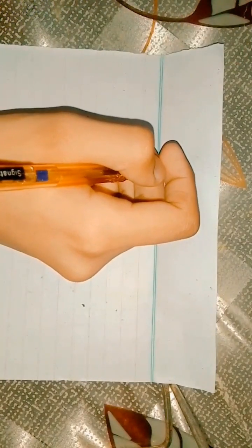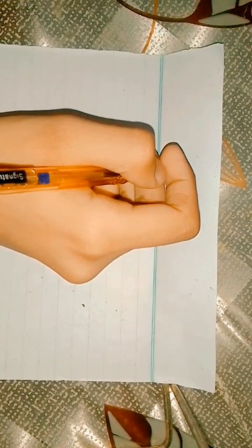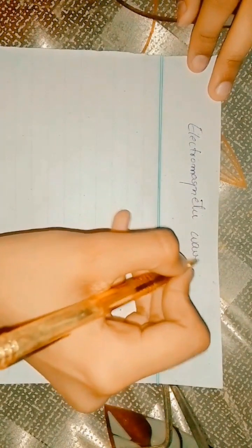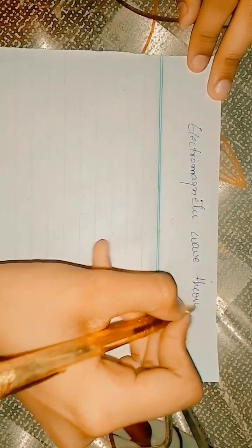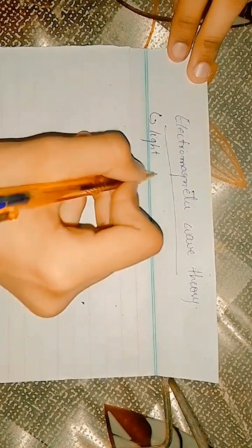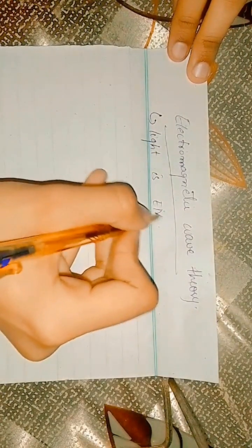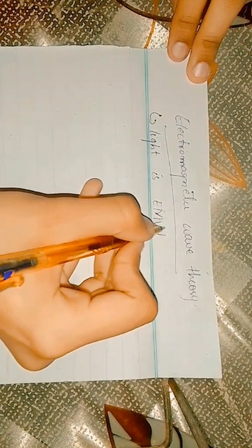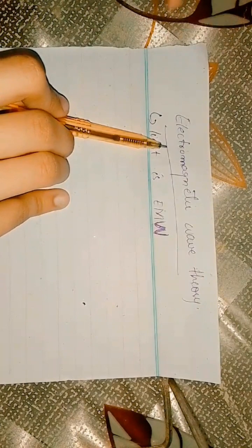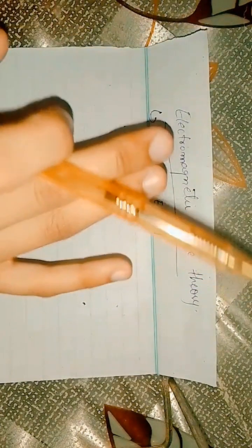As we have discussed the Newton theory as well as the Huygens theory, now we are going to discuss the third theory, that is electromagnetic wave theory. This theory says that light is an electromagnetic wave — light basically travels in electromagnetic waves.